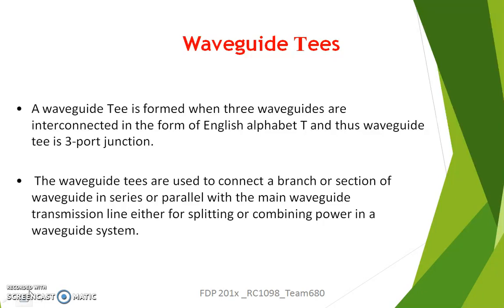A Waveguide T is formed when three waveguides are interconnected in the form of the English alphabet T. Thus, a Waveguide T is nothing but a three-port junction. It is used to either branch a section of waveguide in series or in parallel with the main waveguide transmission line, meaning it can be used either for splitting power or combining power in a waveguide system.